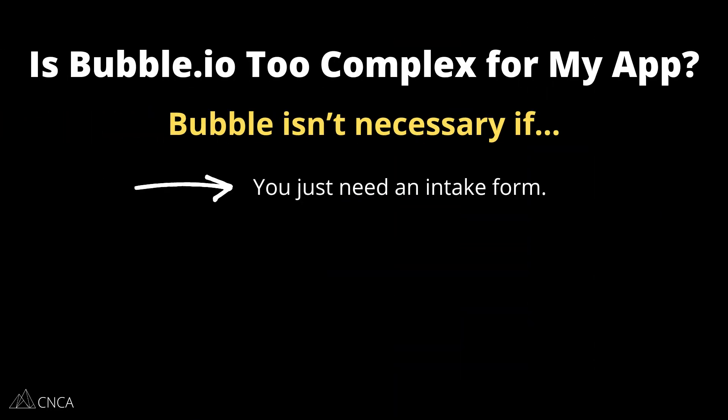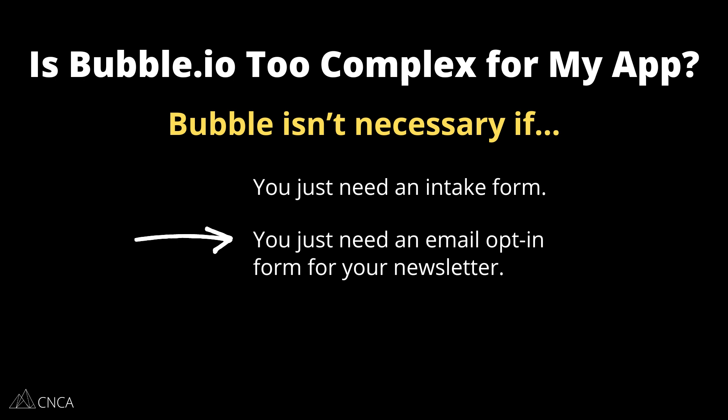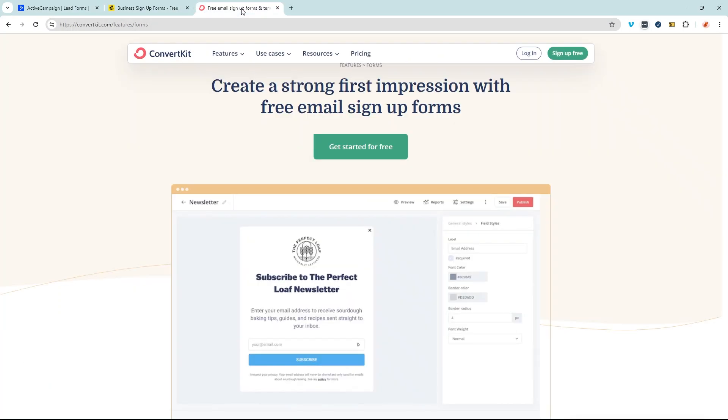Bubble is no-code, but you are in charge of building everything from scratch. If you're just going to be reinventing the wheel, that's when Bubble may be too much platform. For example, if you're just trying to build an intake form, there are many form builders — Google Forms, Typeform, Jotform — that can help you do that very easily and quickly, and even help you embed or share those forms. If you need to collect email addresses for a newsletter opt-in, look at the system you're already using to manage your newsletter — tools like ActiveCampaign, MailChimp, and ConvertKit already have opt-in forms provided for you.